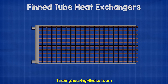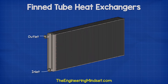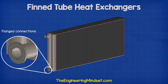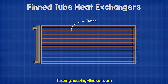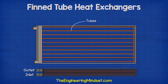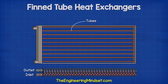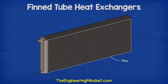A typical fin-tube heat exchanger looks something like this. We see there is an inlet and an outlet, both usually located on the same end. These connections are typically flanged, but they could be threaded or soldered depending on the application and the pressures of the working fluids. Running between the inlet and the outlet is a tube which will contain and direct one of the working fluids, for example, hot water.